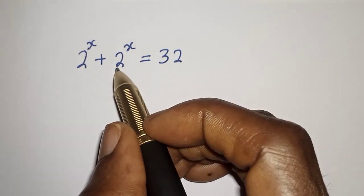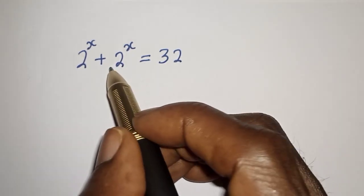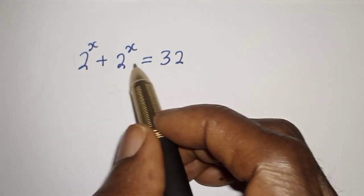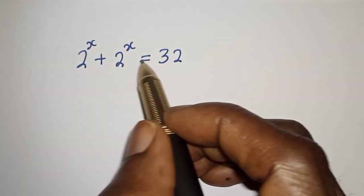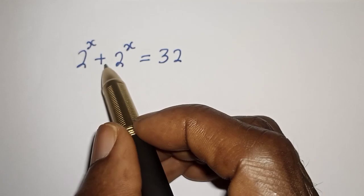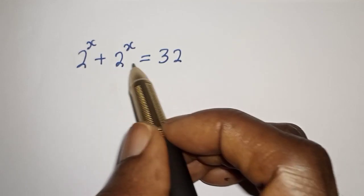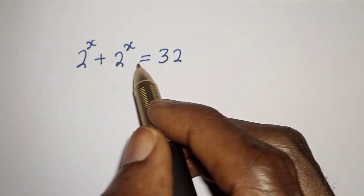Hello, welcome to Magist. In this class I want to find the value of s from this equation: 2 raised to power s plus 2 raised to power s is equal to 32.